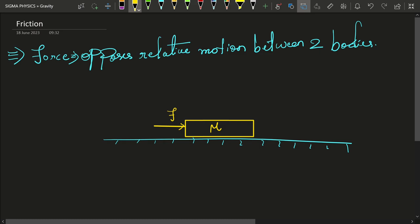So in the absence of friction, there will be acceleration of this book, which would be equal to F by M. But in real life, we know that if you apply a very small force on a body, it does not move. Why?